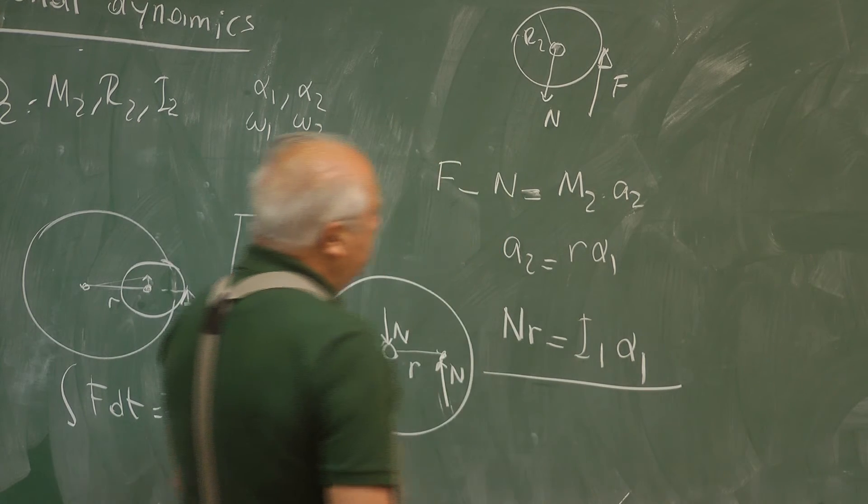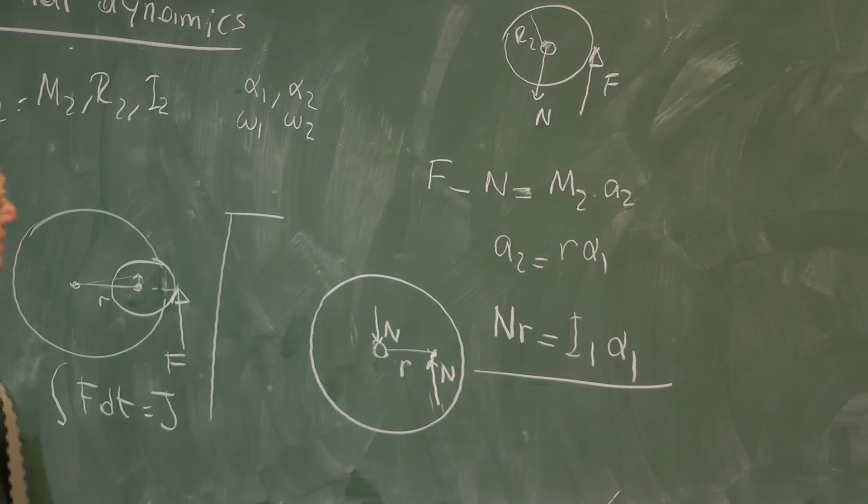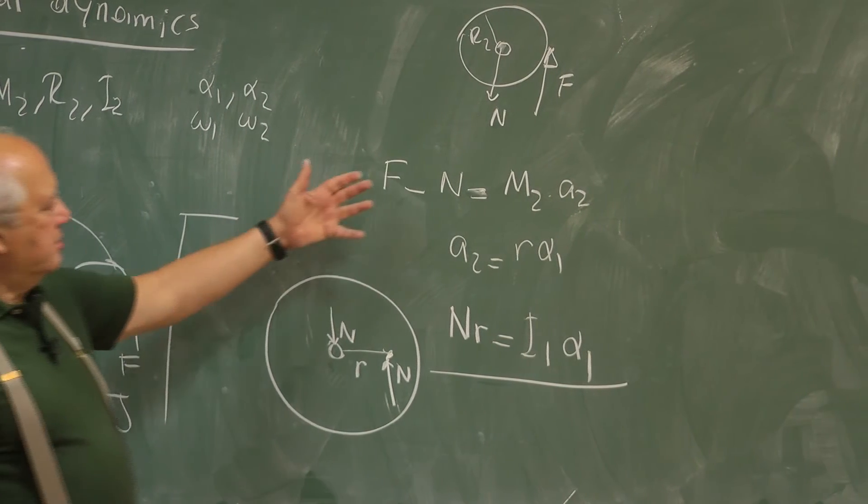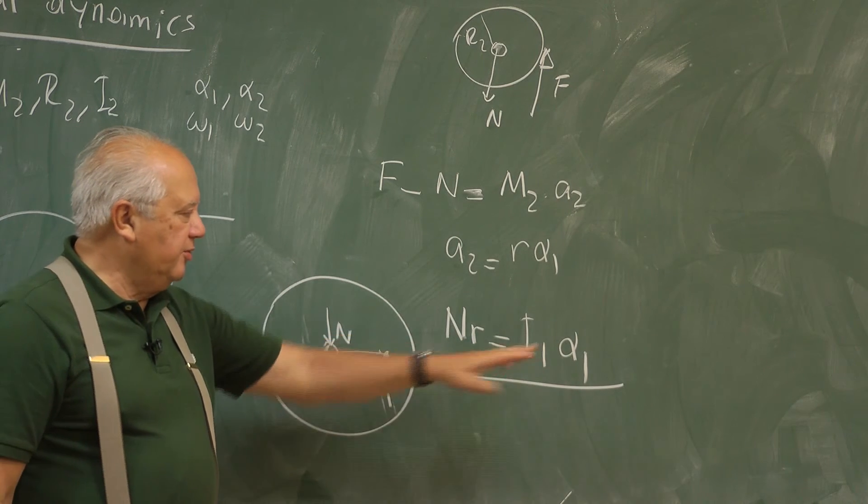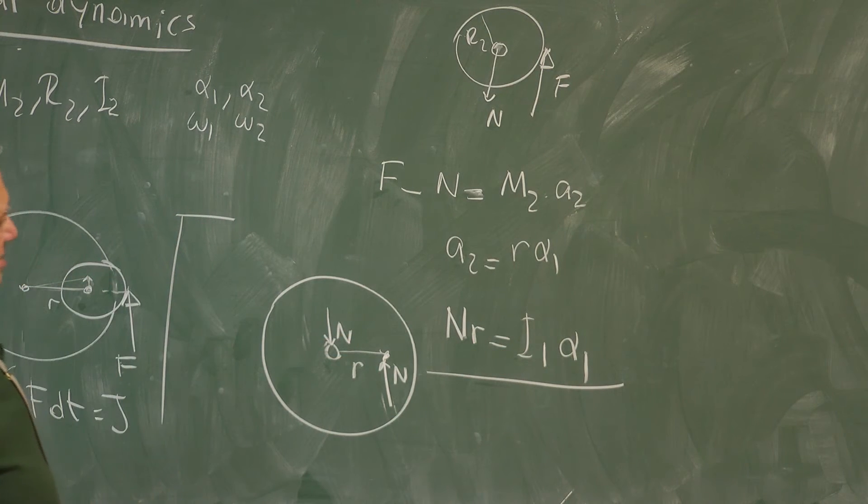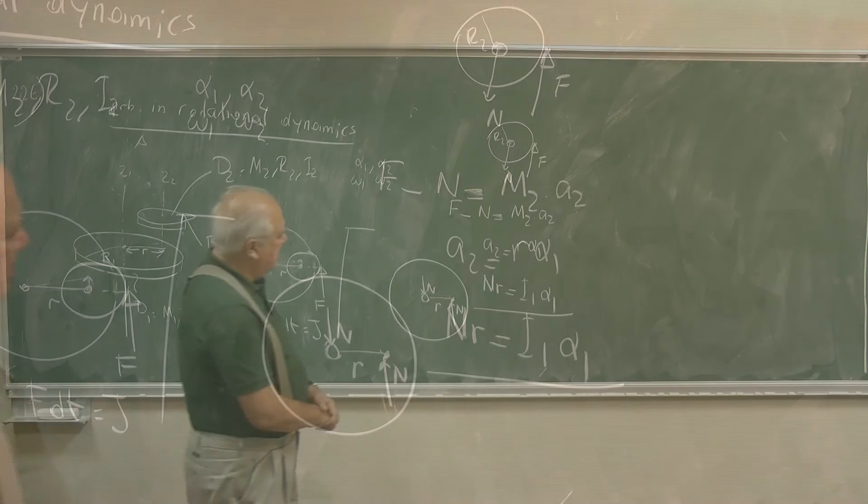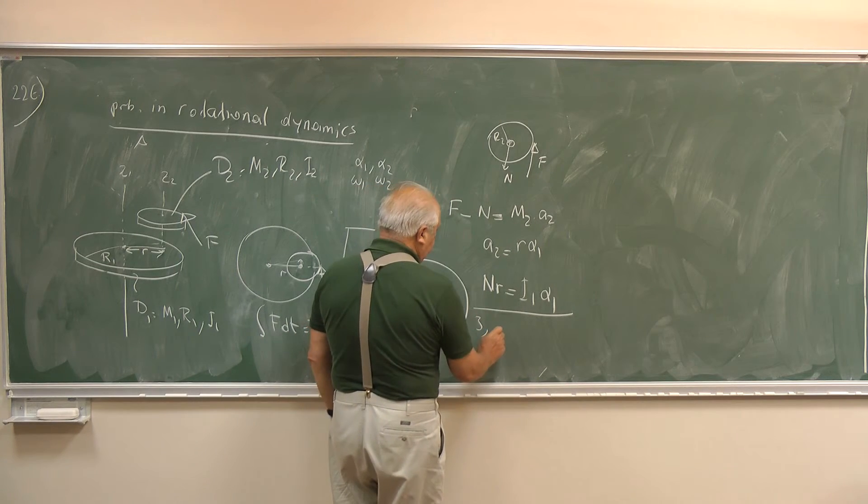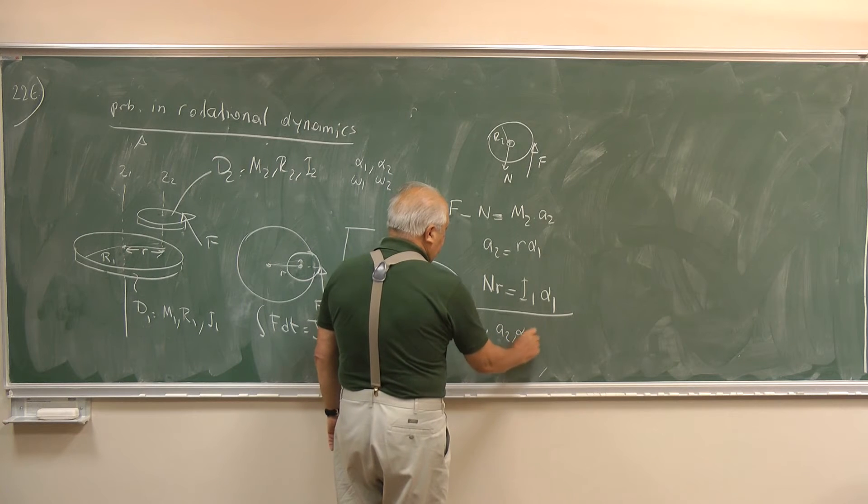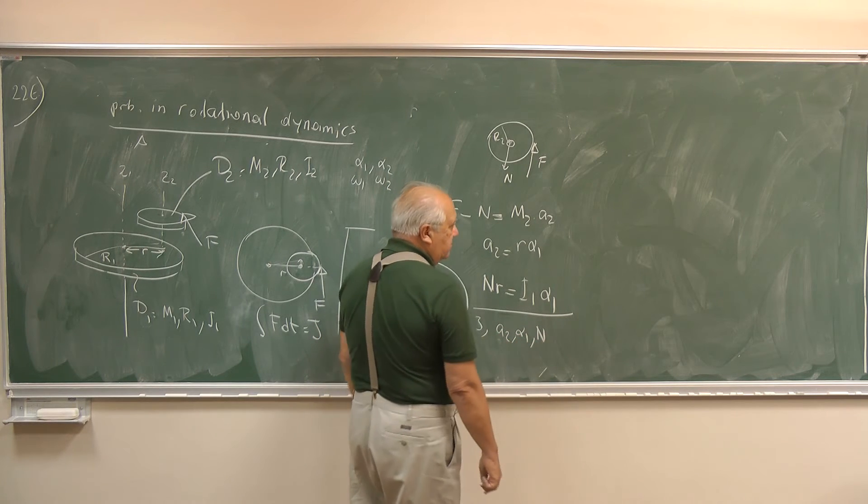So these are the dynamical equations. This is F equals Ma. This is the kinematical constraint. And this is the torque equals moment of inertia times the angular acceleration. Now, how many equations? We have three equations. How many unknowns? We don't know A2, α1, and N. So we can solve them all.